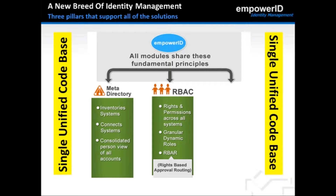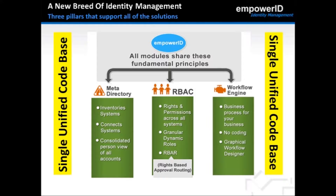The RBAC engine also provides our rights-based approval routing architecture, which automatically routes requests for approval based on delegations configured within the system. And finally, our workflow engine is the platform that provides workflow processing of business logic and rules configured in the system. We provide a state-of-the-art graphical workflow designer, allowing the creation and manipulation of workflows spanning the spectrum of complexity — from simple no-code workflows to complex workflows utilizing industry-standard .NET and C# coding.